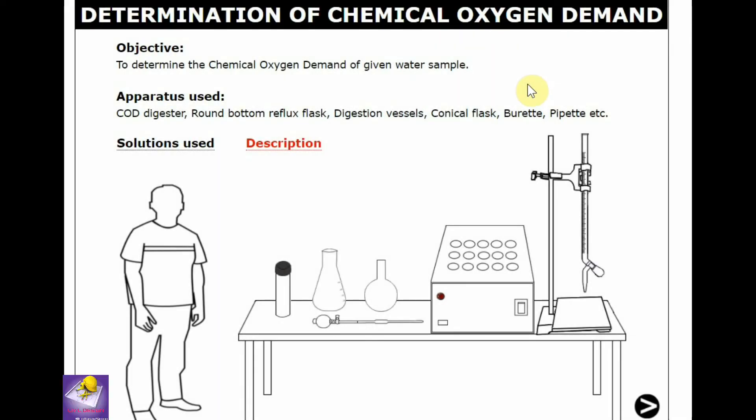Hello guys, today we discuss the determination of chemical oxygen demand in a water frame. The apparatus we require: digestion vessel, conical flask, round bottom reflux flask, graduated pipette, COD digester, and burette.